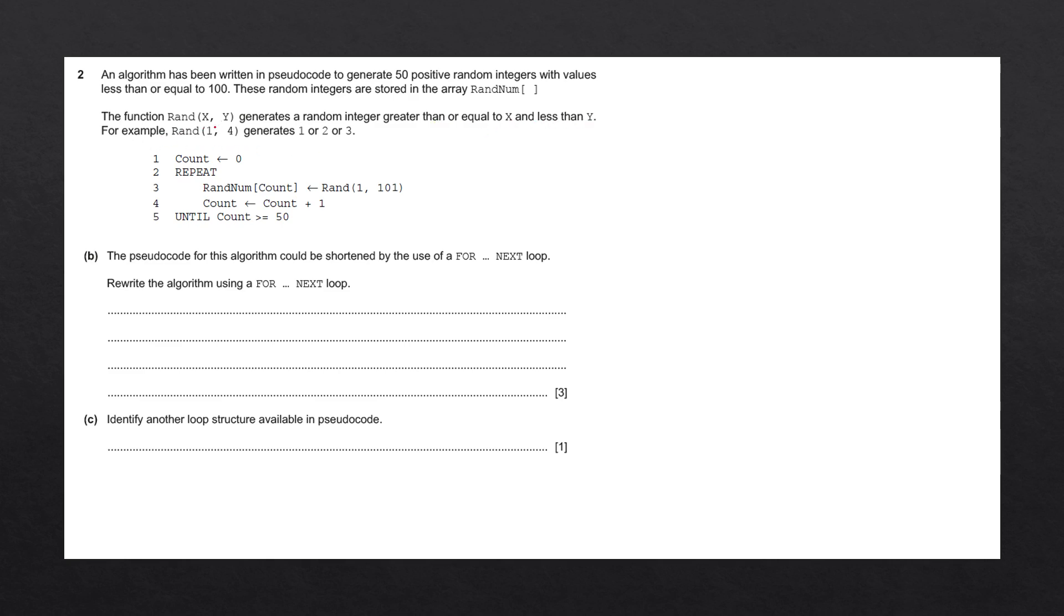For example, rand(1,4) generates 1 or 2 or 3. Question b says, the pseudocode for this algorithm could be shortened by the use of a for-next loop. Rewrite the algorithm using a for-next loop.